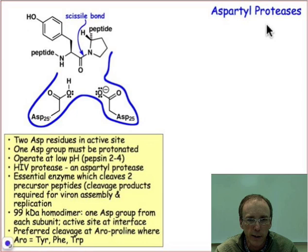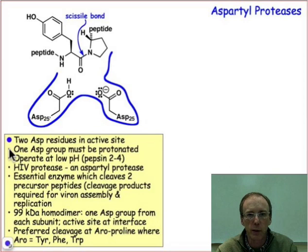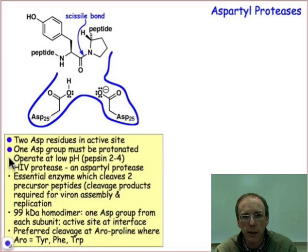So let's take a look at that. Aspartyl proteases had long been known. They're actually enzymes that are found in the digestive system. They contain two aspartyl groups in the enzyme active site—that's why they're called aspartyl proteases. One of them is going to be protonated and serves as a general acid, and the other will be unprotonated and can serve as a general base.